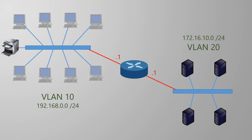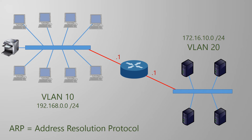You may be wondering how devices and the router know which IPs match up to which MAC addresses. The short answer is that they use a protocol called ARP, or Address Resolution Protocol. Basically, a device broadcasts an ARP message asking who owns a particular IP address, and if the owner is in the local network it will respond with its MAC address. We'll go into the details of how this works in a few videos' time.